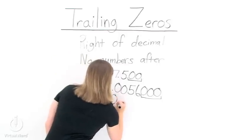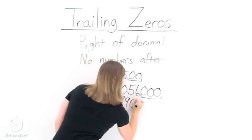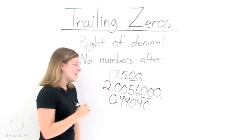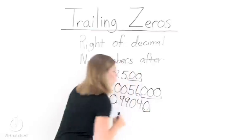One more. 0.999040. Find the trailing zeros. In this case, there's only one trailing zero right at the end.